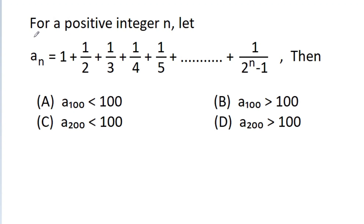In this video, we have given that for a positive integer n, let a_n equal to 1 plus 1/2 plus 1/3 plus 1/4 plus 1/5 plus up to 1 by 2^n minus 1. Then we have to choose the correct option from the four options given.